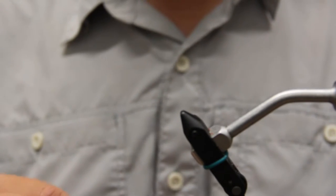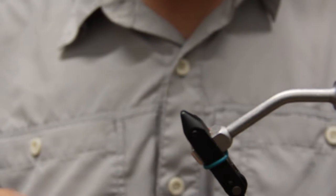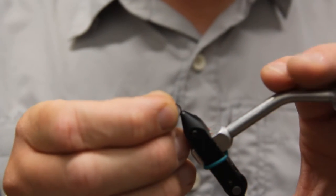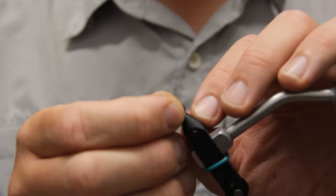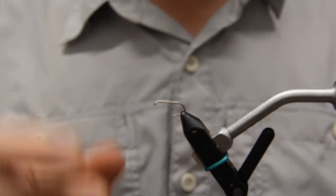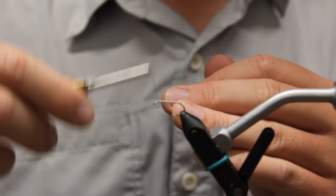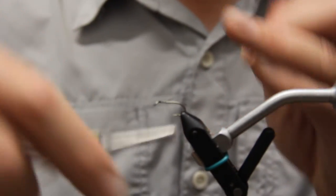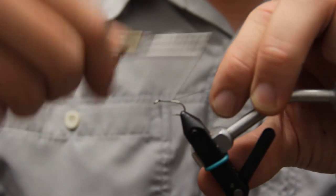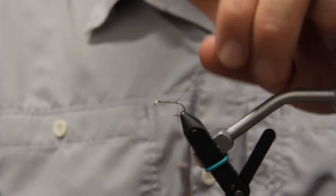Now for our front shank, we're going to use an Umpqua 105 in a size 10. Pretty strong nymph hook, down eye. I'm going to dress this all the way back to the barb.